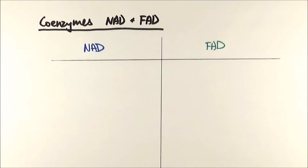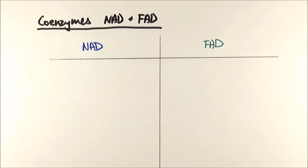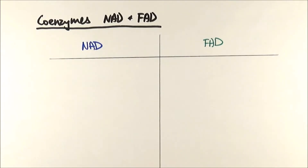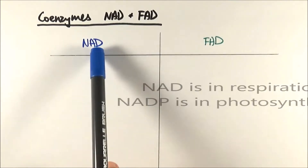We've been talking about the two coenzymes NAD and FAD quite a lot in respiration, so it's important to have a think and see what the differences are. You are not required to memorize their structure or even their full name, but just be aware that they are the coenzymes that are involved in respiration.